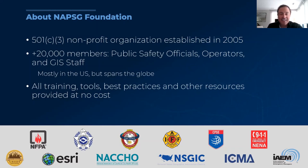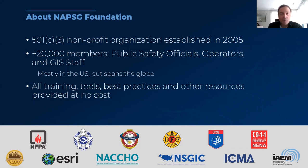NAPSIG Foundation, as most of you know, is a 501(c)(3), which means we're not a member organization. We're a nonprofit controlled and governed by a board of directors comprised mostly of active duty or recently retired public safety officials. We like to think of you all as our members, even though technically we don't charge membership dues. We have over 20,000 public safety officials, agencies, and GIS staff — mostly in the US, but spanning multiple countries around the globe, making this truly an international organization.